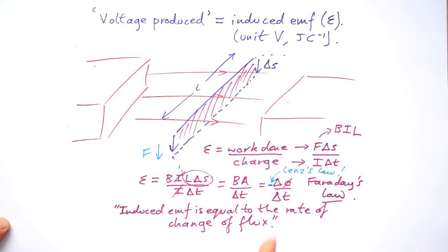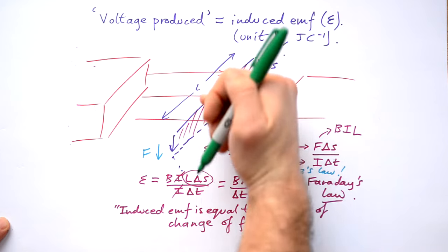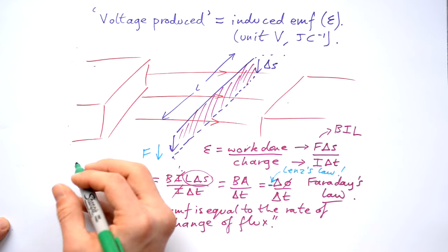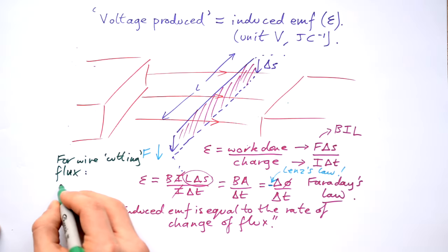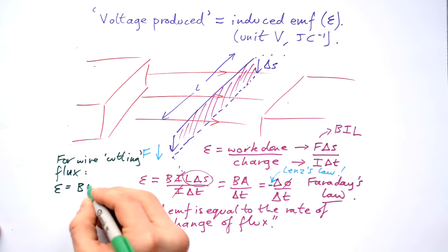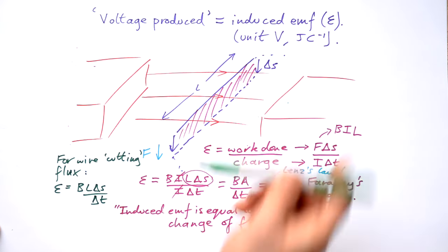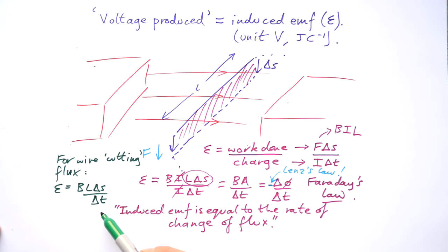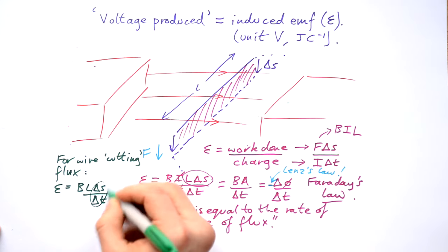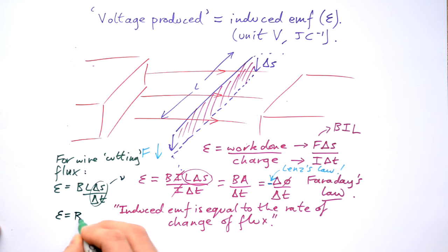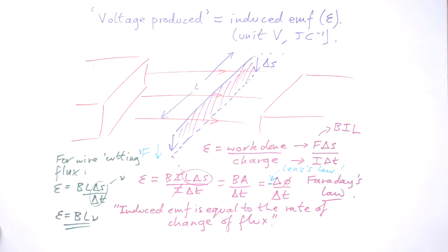Faraday's law is the most important equation when it comes to electromagnetic induction. Now let's just apply Faraday's law to this specific example. If we're moving a wire perpendicular to the magnetic field, so it's cutting the field lines perfectly, then we can find out the EMF this way. We have the EMF equals B L delta S over delta T. But delta S divided by the time it takes — distance divided by time — that's actually speed, velocity. So the EMF induced in a wire cutting field lines perpendicularly is B L V.